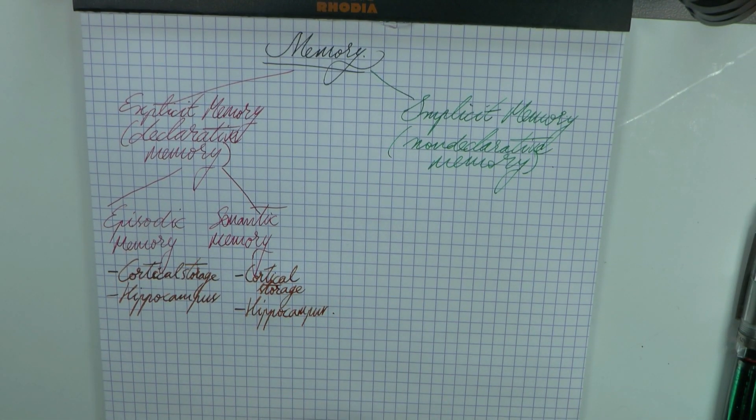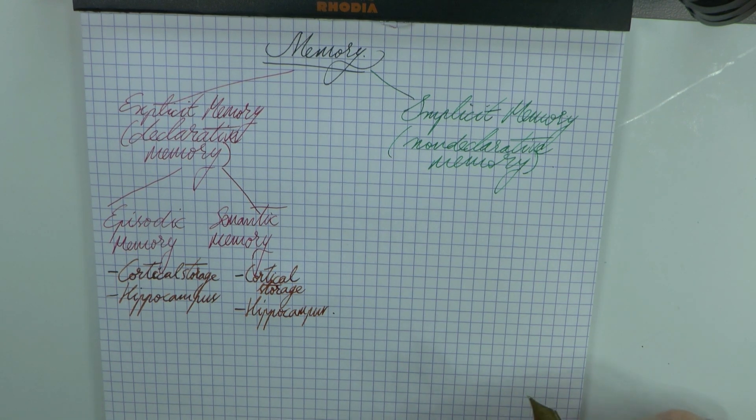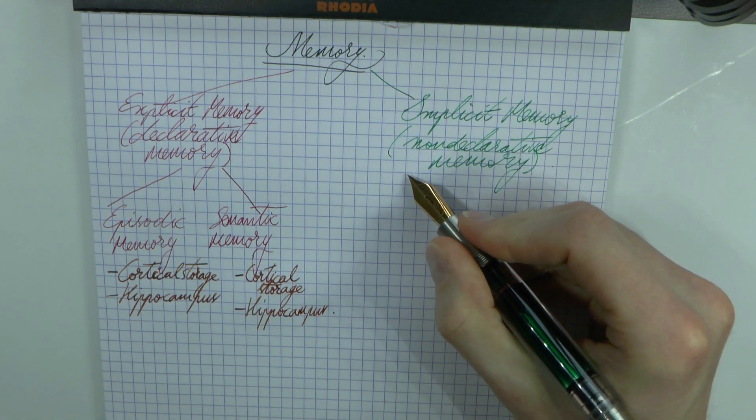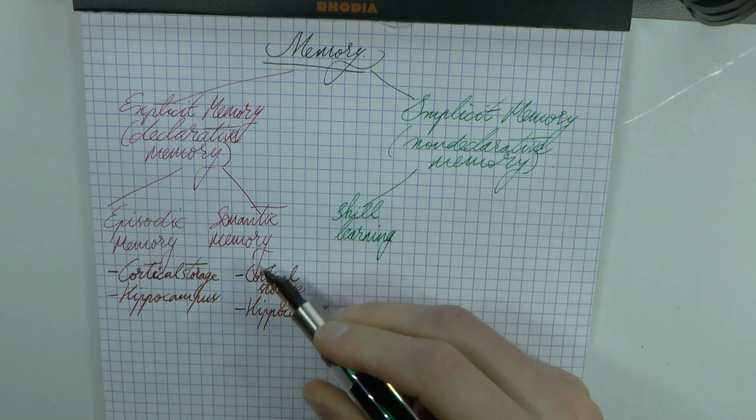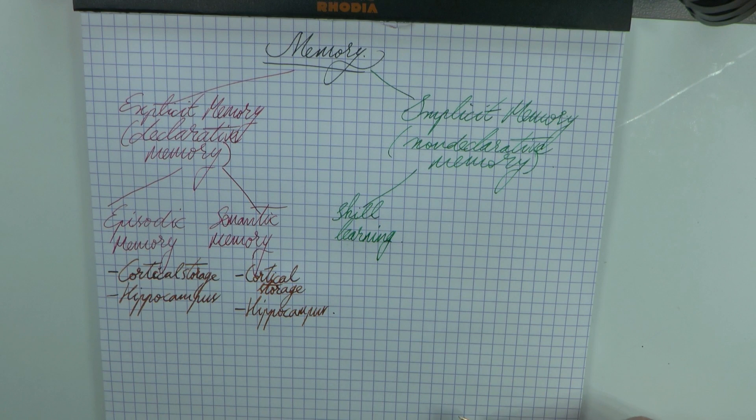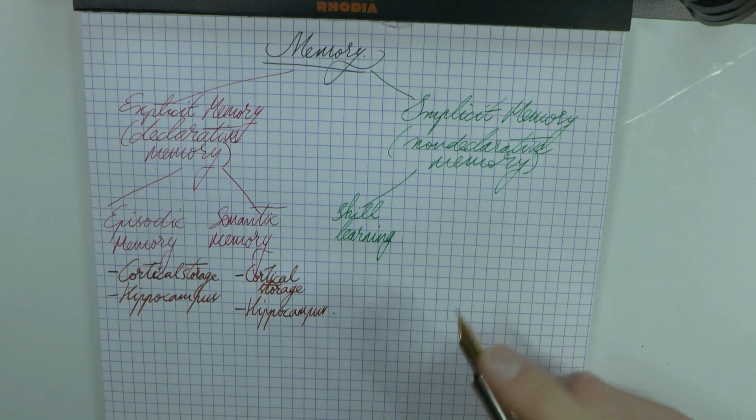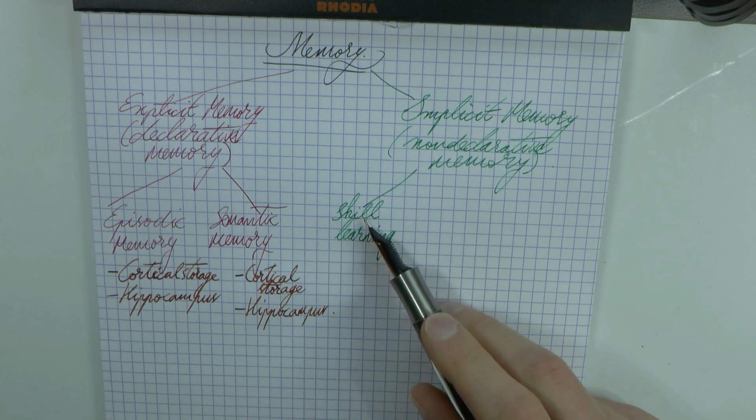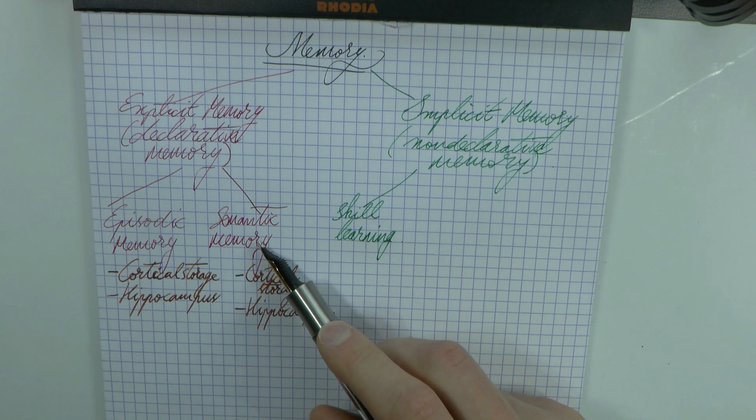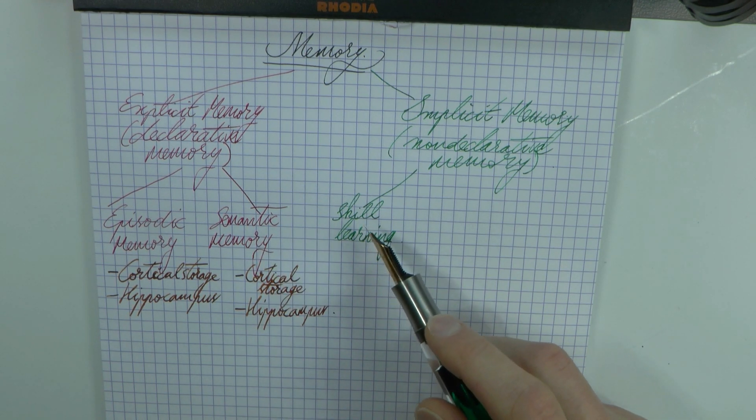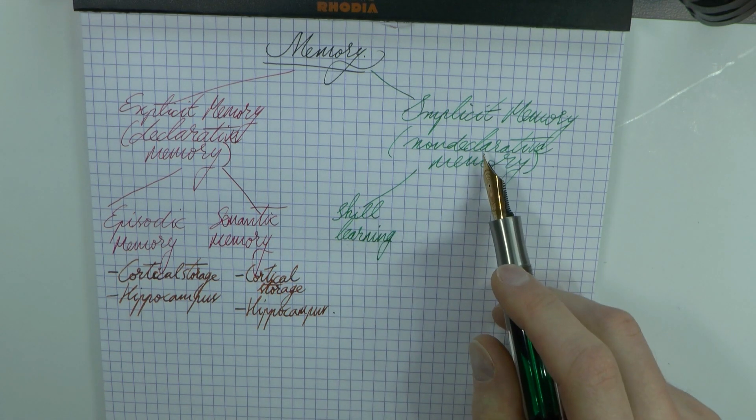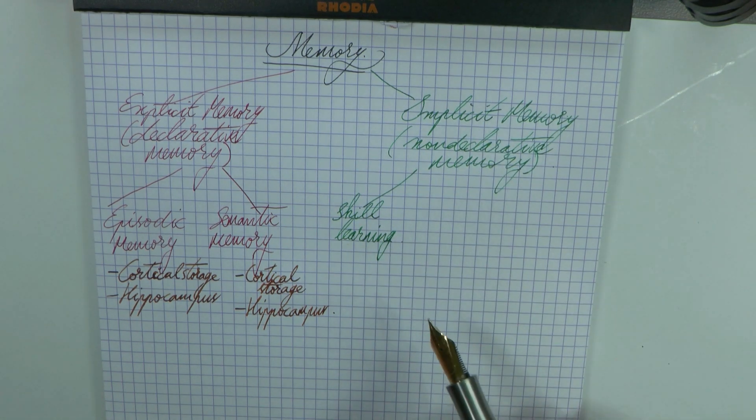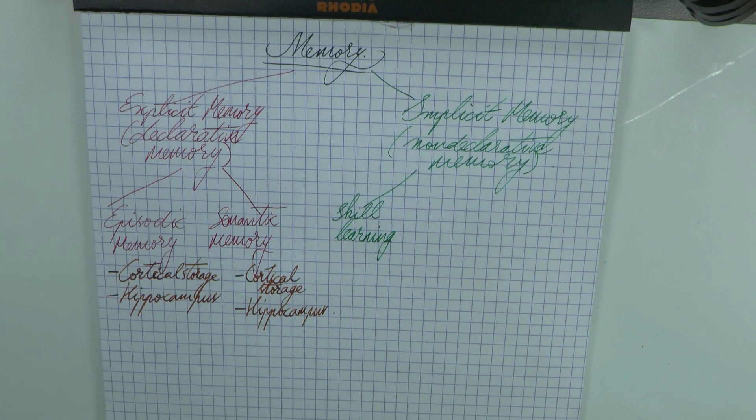But let's first talk just a little bit about implicit memory. What do we have in implicit memory? Well, we have a couple of things. We have skill learning. You may remember that HM, even though he had trouble with factual stuff, remembering new facts, he could learn new motor skills. If you think of something like being able to ride a bike, that's a motor skill, that would be skill learning. This is non-declarative because even though you can describe what a bike looks like—that's semantic memory—you cannot explain to someone how to ride a bike. You can't explain to someone how to maintain their balance because that's non-declarative. You cannot actually make that explicit, it's implicit memory.